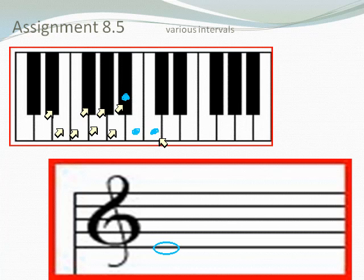Let me show how I'd put that on the staff. There's E flat, and then I put the C up here with two flats before it. There is a particular symbol for double sharp — it looks like a little X. For double flat you just write two flat signs. E flat to C double flat is a diminished sixth.